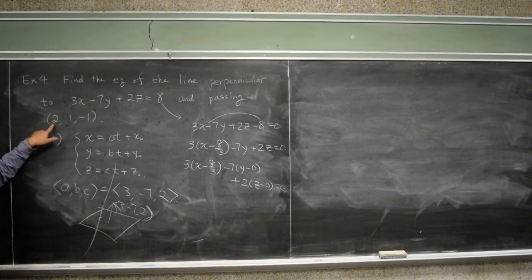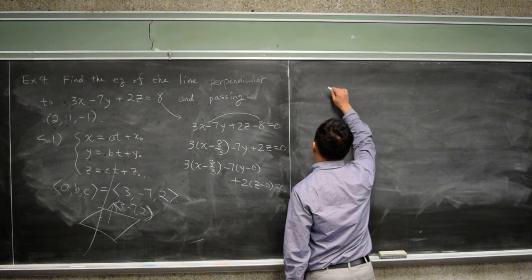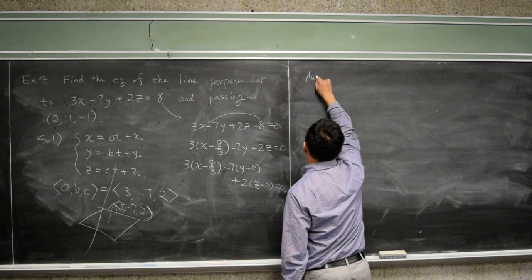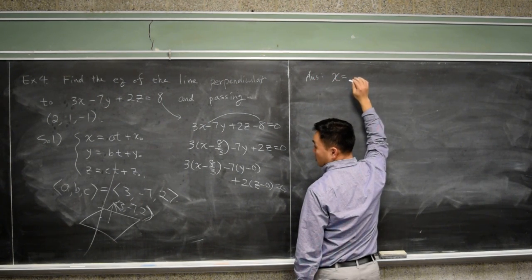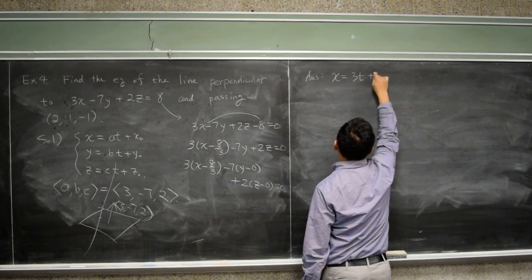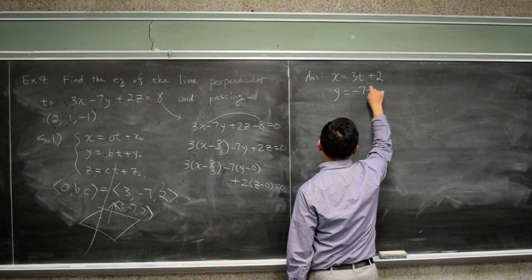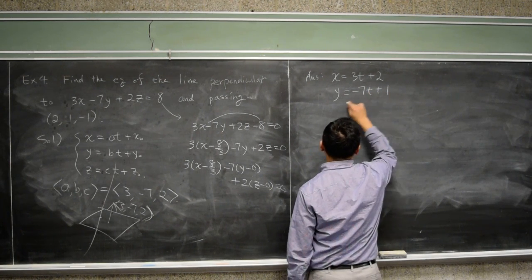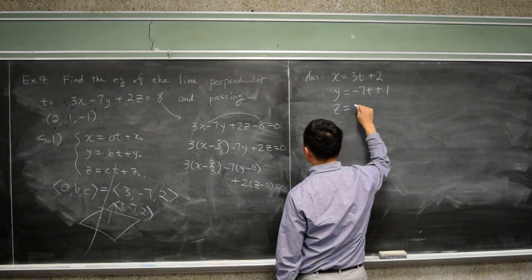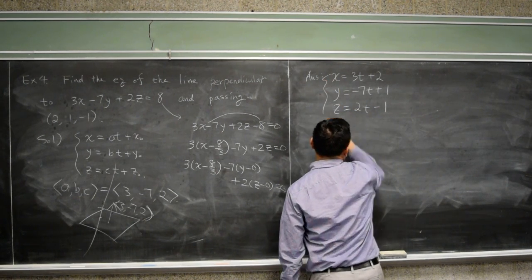And then X, Y, Z now could be 2, comma 1, comma negative 1. Therefore, your answer can be written as: X equals 3t plus 2, Y equals negative 7t plus 1, Z equals 2t minus 1.